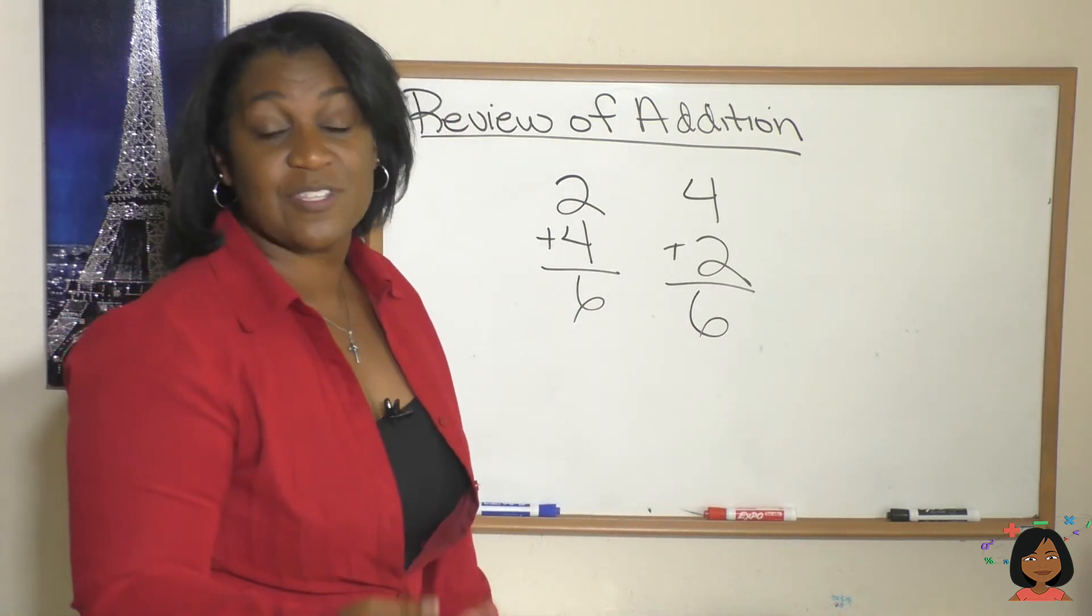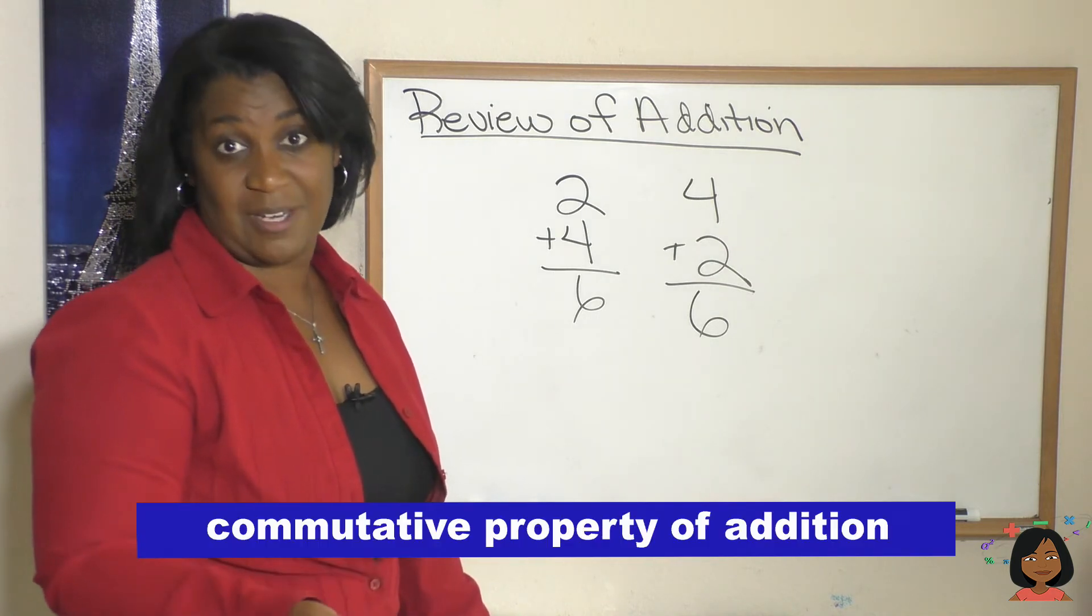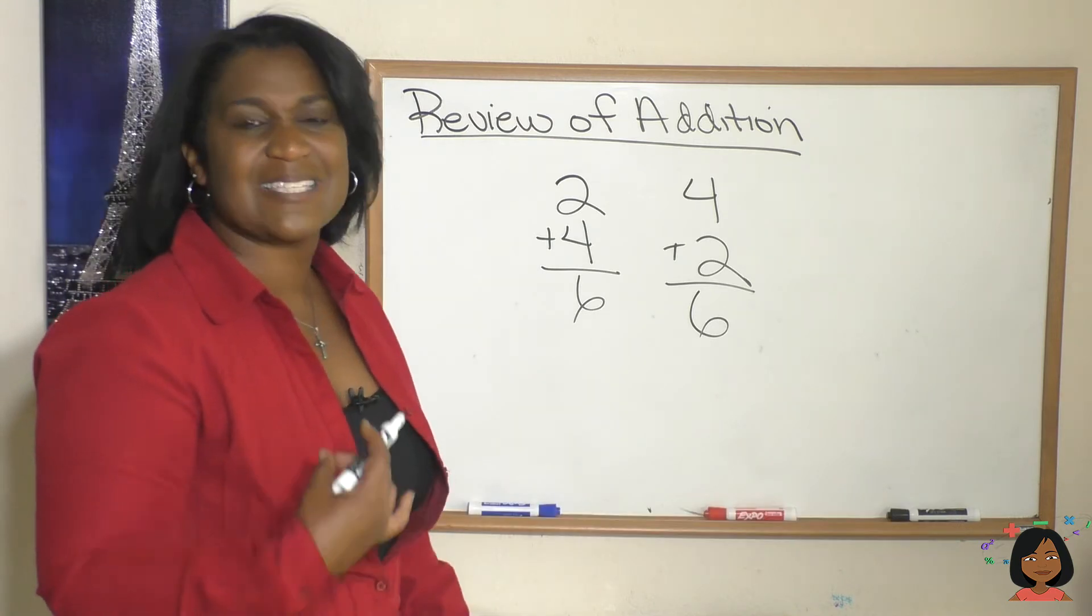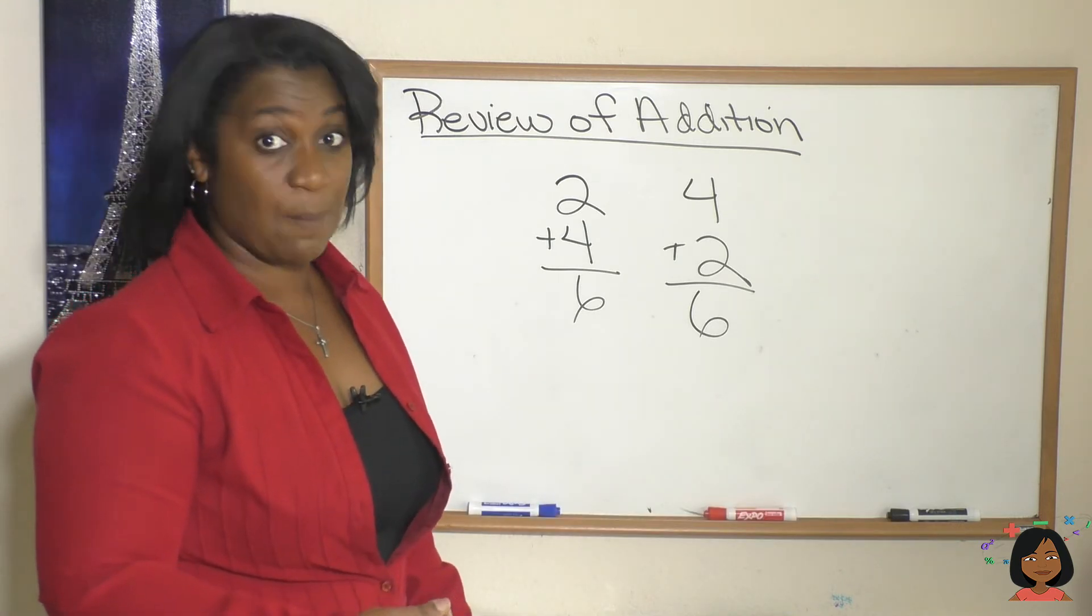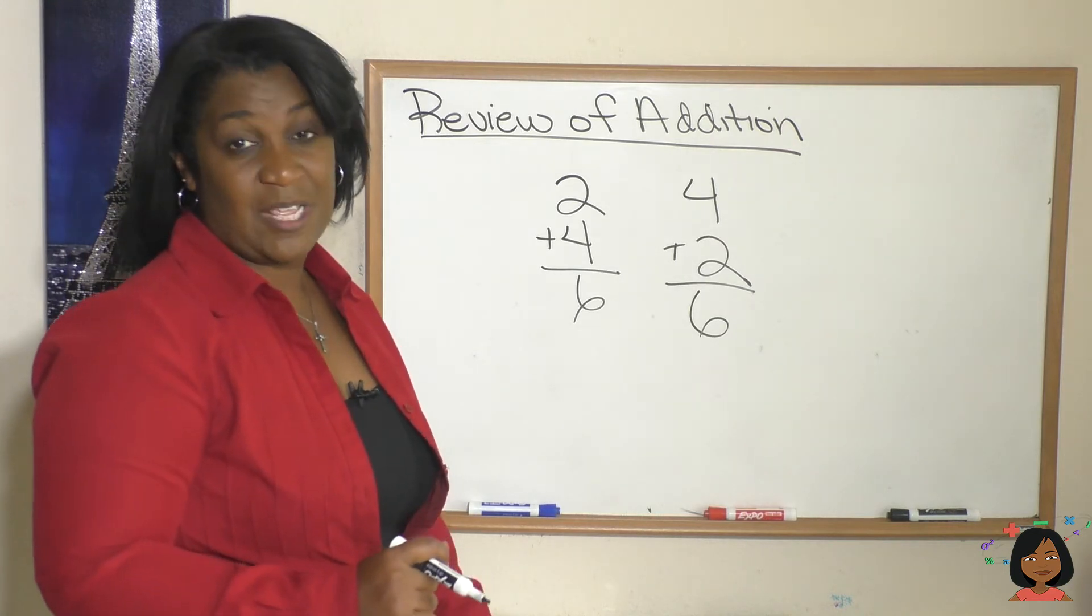In math, this is a special property. It's called the commutative property of addition. It means that you can change the order of the addends and still end up with the same sum.